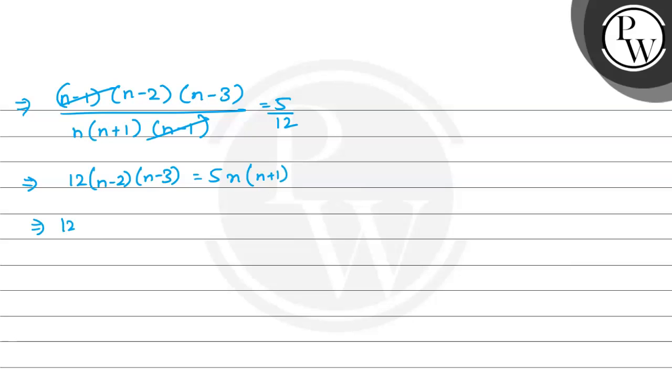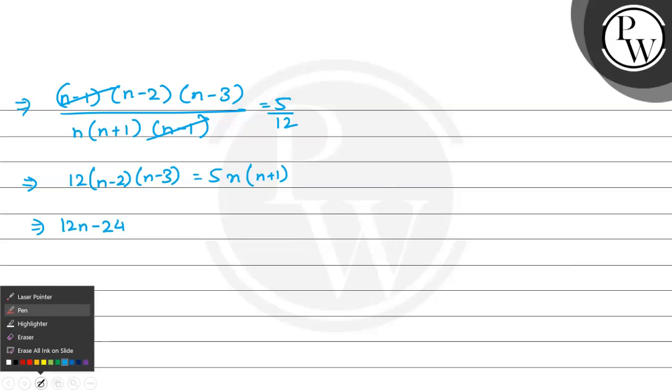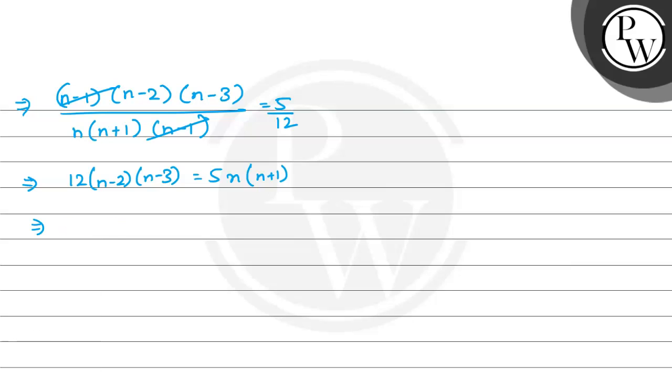Now, rather than opening directly, let's first multiply inside, then open the bracket. That would be easy. 12 multiplied by n square minus 3n minus 2n plus 6 equals 5n square plus 5n.